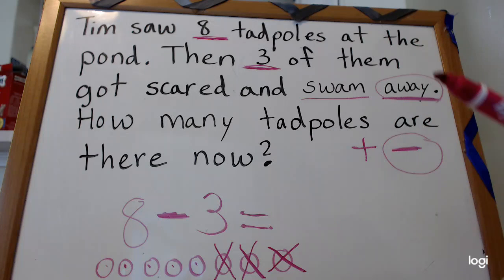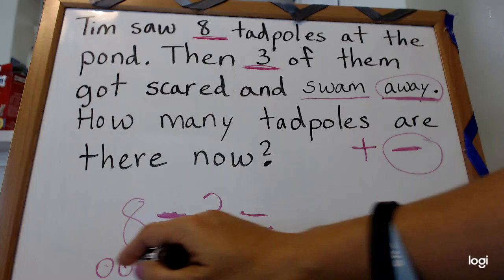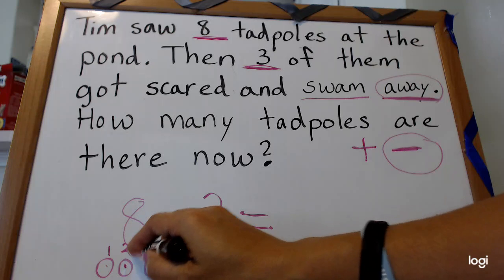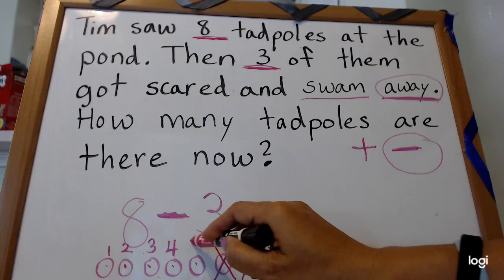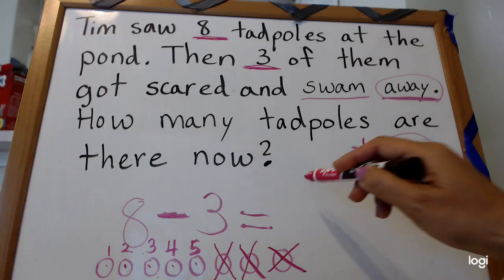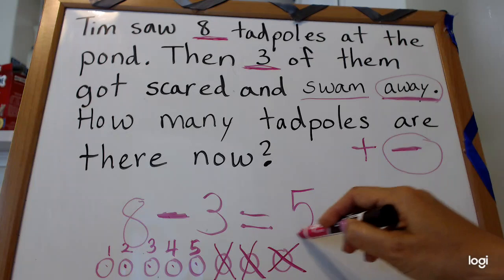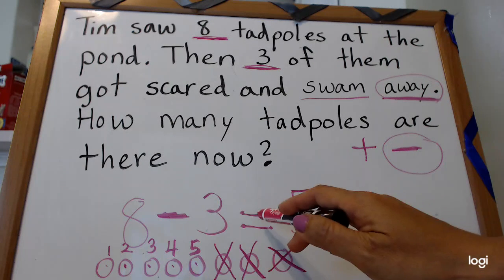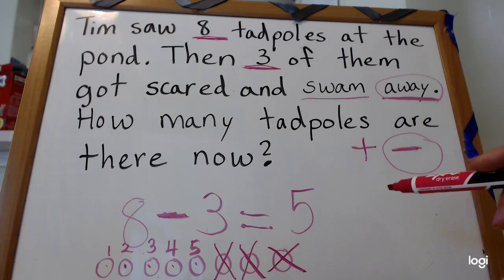Now what do I do? Yes, now I go and I count the ones that are left over. One, two, three, four, five. So there's five left over. There were eight tadpoles, three swam away, and now there are five.